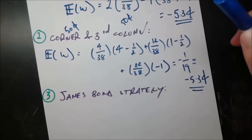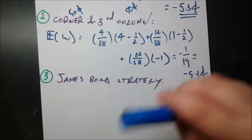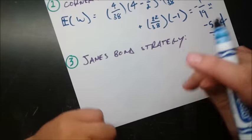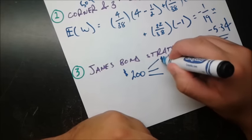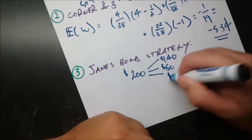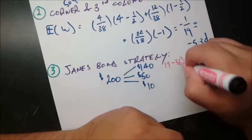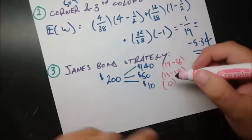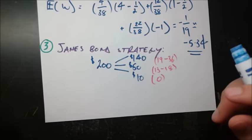We should not use this strategy if we're trying to make money in the long run. Now we're going to try an even more complicated strategy that's been written in a book — the James Bond strategy, suggested by the original author of the James Bond books. It involves putting bets in three different places. We're going to start with $200 and put it in three different places: $140 in one place, $50 in another, and $10 in another.